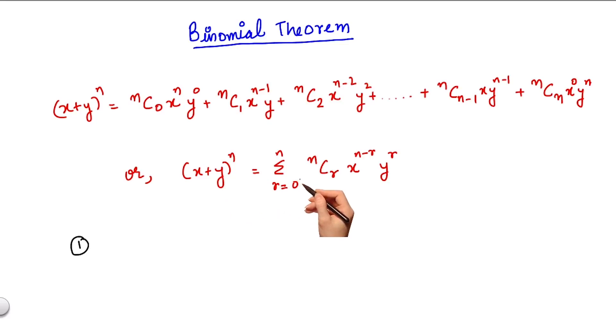First, since r goes from 0 to n, the number of terms in this expansion is n plus 1.